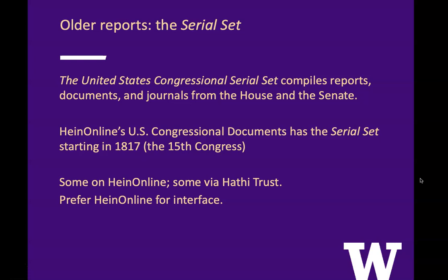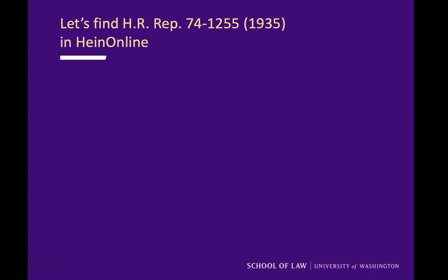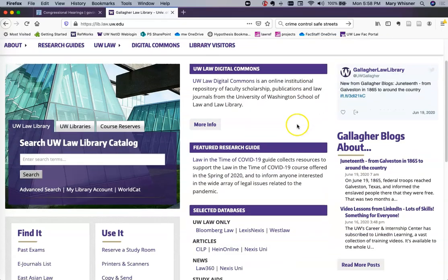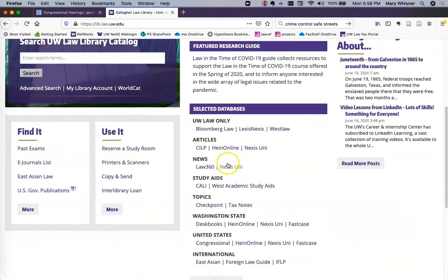Some of the serial set volumes are on HeinOnline; some are on a service called the Hathi Trust. If the document you need is in both places, I recommend that you choose HeinOnline because the interface has some advantages. Let's find House of Representatives Report Number 74-1255 from 1935 in HeinOnline.